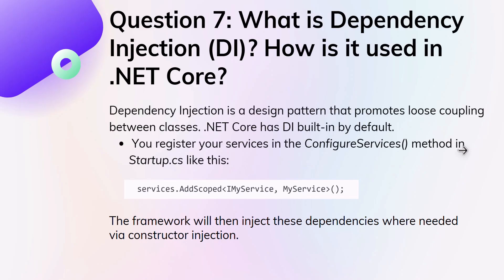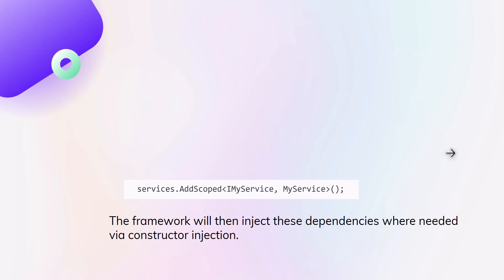Seventh question: what is dependency injection and how is it used in .NET Core? Dependency injection is a design pattern that promotes loose coupling between classes. .NET Core has built-in dependency injection by default. You can register your services in the ConfigureServices method in Startup.cs, for example: services.AddScoped<IMyService, MyService>(). The framework will then inject these dependencies where needed via constructor injection.